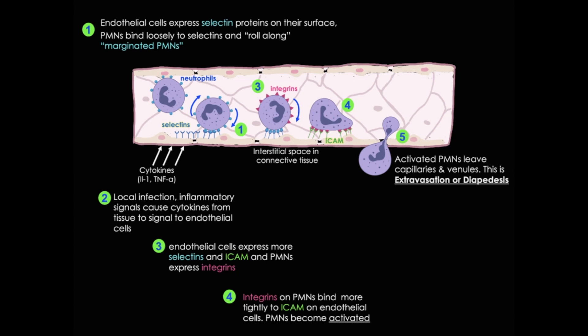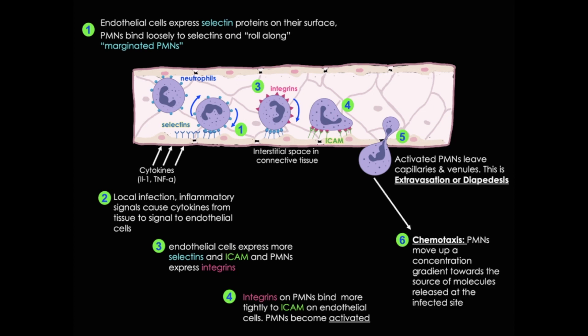We call this process extravasation or diapedesis. Once they're out and into the tissue, the PMNs will migrate towards the source of the signals via chemotaxis — now fully functional and ready to perform their jobs. Remember, all leukocytes have this ability.